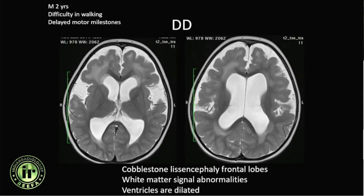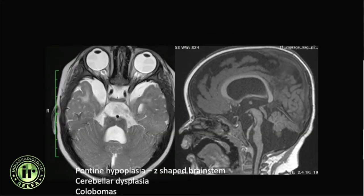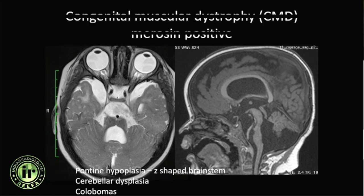A similar case — a two-year-old male with delayed motor milestones — shows diffuse bilateral polymicrogyria, periventricular signal abnormalities, and dilated ventricles. Although Zellweger's was considered, this patient had predominantly motor symptoms, brainstem involvement, multiple tiny cerebellar cysts, and vermian hypoplasia, with a dysmorphic brainstem seen on T1 sagittal. This was merosin-positive congenital muscular dystrophy — a reminder that not everything with white matter signal abnormality is a leukodystrophy.